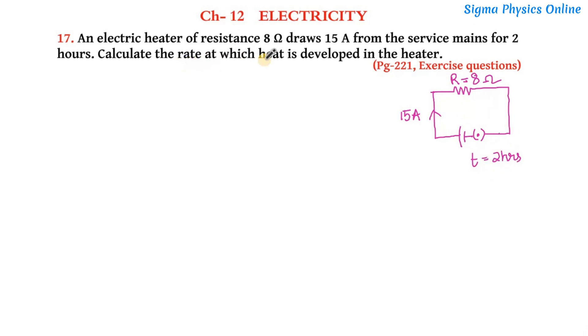Now how can we find the rate at which heat is developed? The rate at which heat is developed is nothing but the power rating of this device. So basically it's asking us what's the power rating of this device.